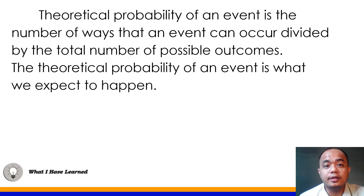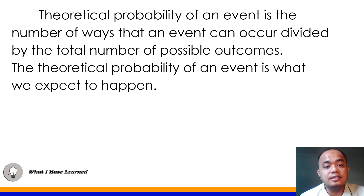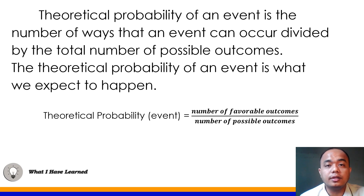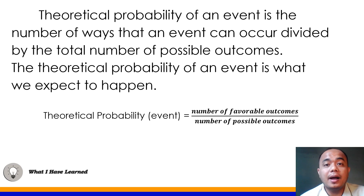In our Part 1 and Part 2 of the video lesson of this module, we learned that the theoretical probability of an event is the number of ways that an event can occur divided by the total number of possible outcomes. The theoretical probability of an event is what we expect to happen. We use this formula: the number of favorable outcomes over the number of possible outcomes.